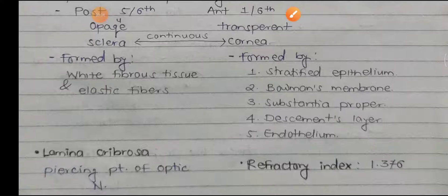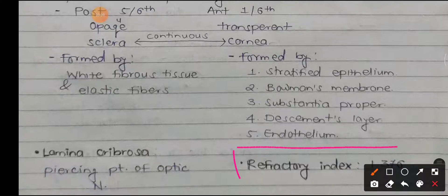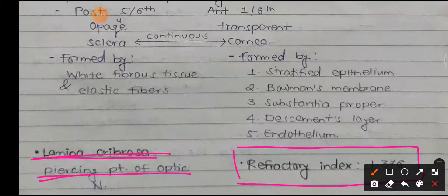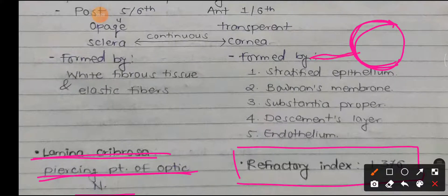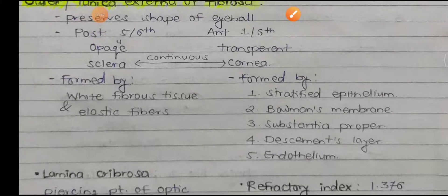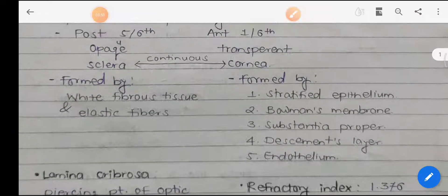The refractive index of the cornea is 1.376. The lamina cribrosa is the term for the point where the optic nerve pierces the sclera. The optic nerve leaves from the posterior part of the eye, and the circular rim where it pierces the sclera is known as the lamina cribrosa. The sclera and cornea are continuous with each other.